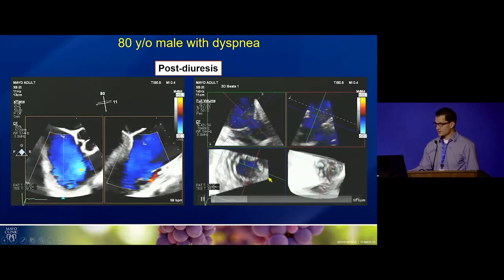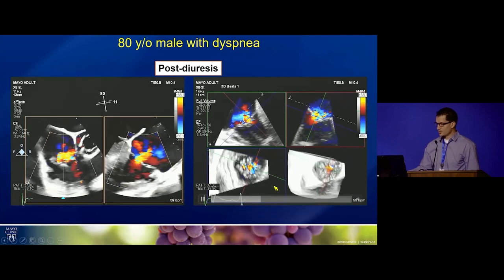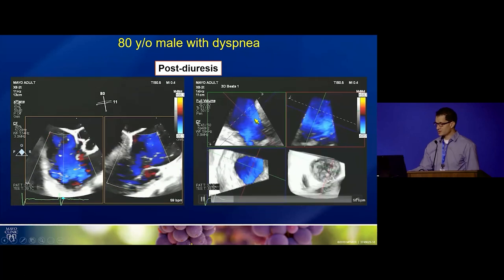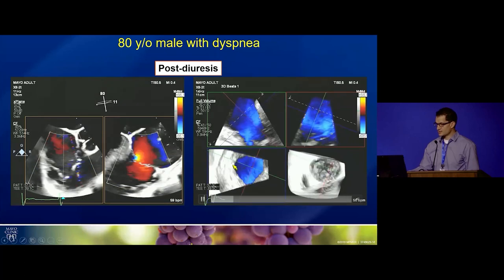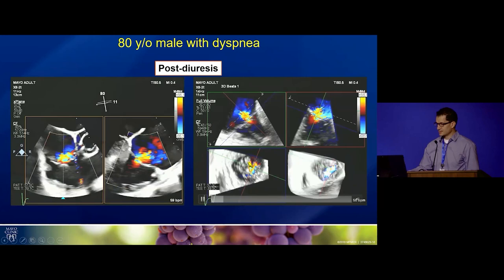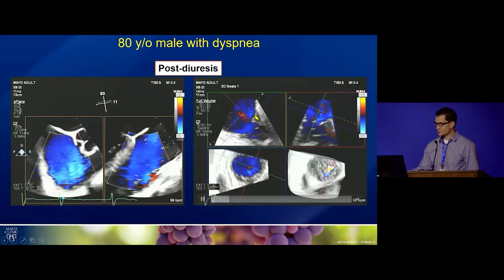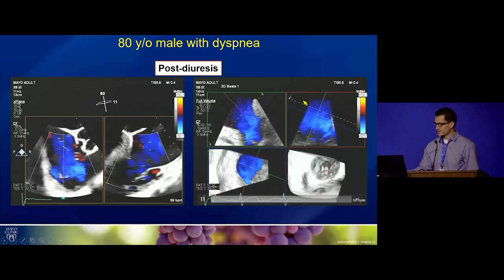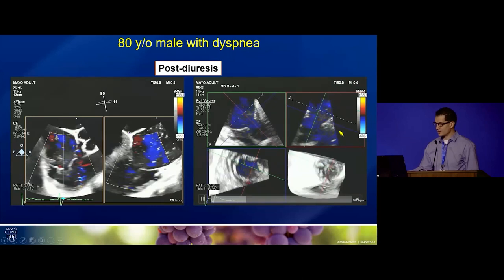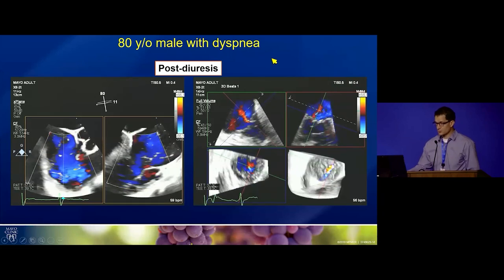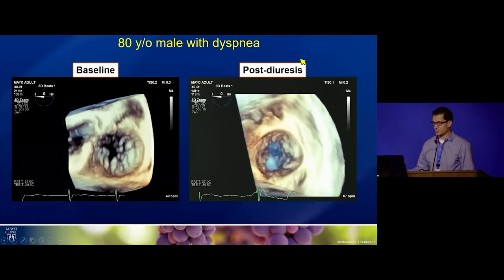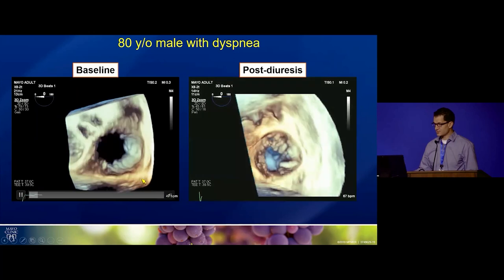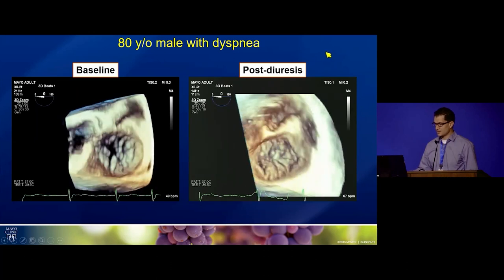Using 3D multiplanar reformatting, we can adjust planes to show what we want. The lower left panel shows a simulated short axis at the annular level, with the green line through the aortic valve providing an anterior reference for an anterior-to-posterior dimension. The orthogonal view shows the septal-to-lateral dimension. With 3D we can see these valves in a way that's really not possible with 2D. Baseline versus post-diuresis showed a dramatic difference.